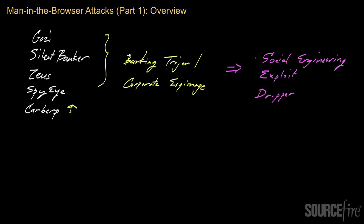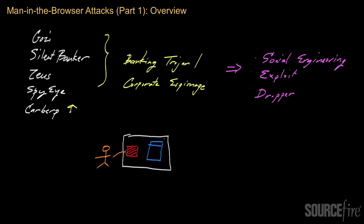Let's say we have a system infected with a piece of malware that implements a man-in-the-browser attack. What's going to happen is the malware will interfere with data passed between the user and their web browser. When the user interacts with their web browser, all the traffic actually passes through the malware. The malware effectively co-opts the communications channel between the user and their browser — and this is all happening within the system itself. The malware can then interfere with that data, recording it or modifying it.